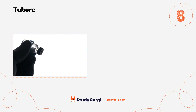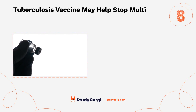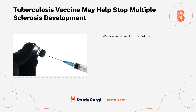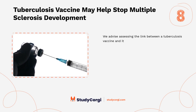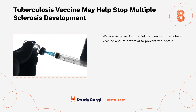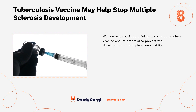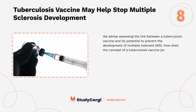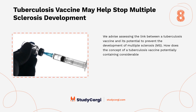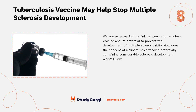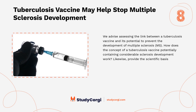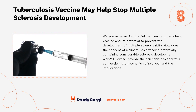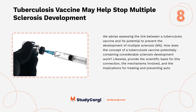Tuberculosis Vaccine May Help Stop Multiple Sclerosis Development: We advise assessing the link between a tuberculosis vaccine and its potential to prevent the development of multiple sclerosis (MS). How does the concept of a tuberculosis vaccine potentially containing multiple sclerosis development work? Likewise, provide the scientific basis for this connection, the mechanisms involved, and the implications for treating and preventing autoimmune diseases.